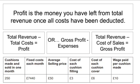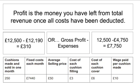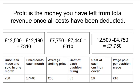So the profit is £310. We could also get our gross profit of £7,750 — that's £12,500 minus £4,750 in total variable costs — and then just take off our fixed costs, also known as expenses, and we still get £310 net profit.